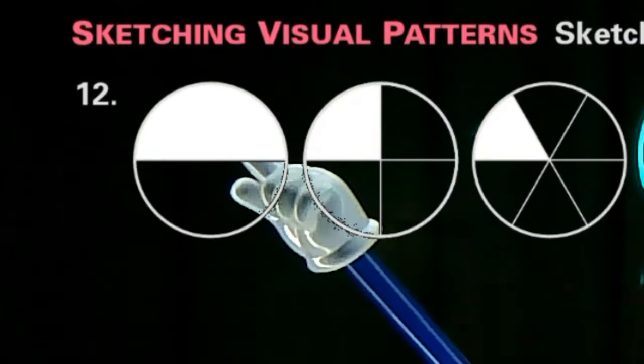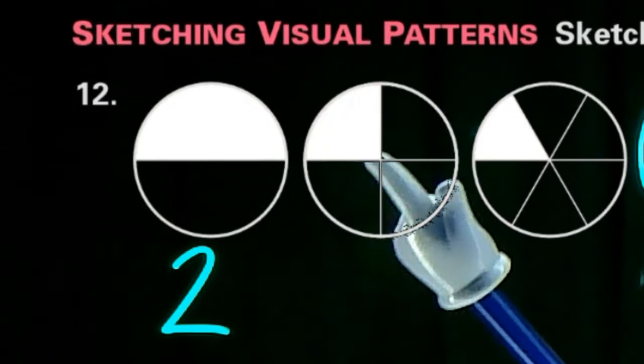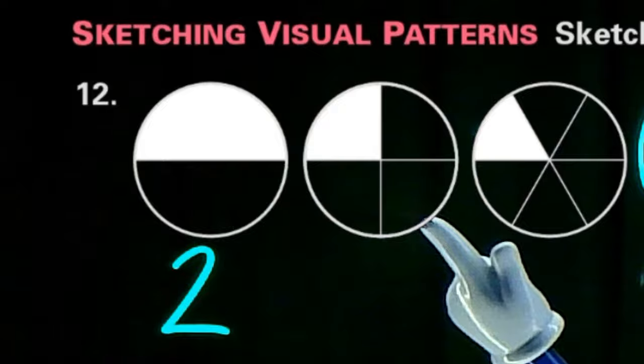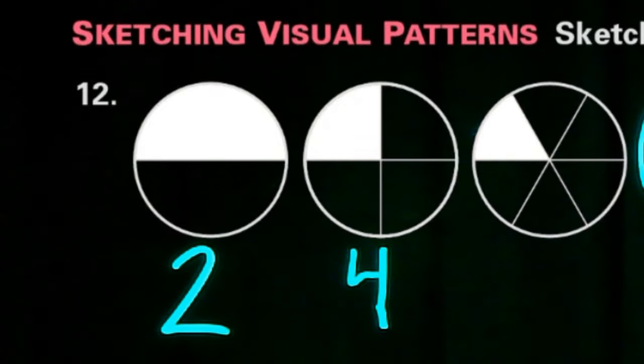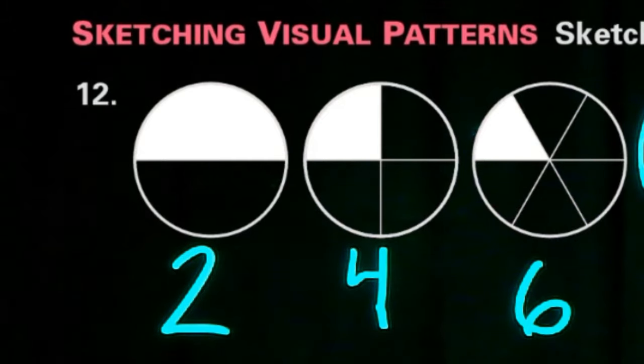This first circle is one, two pieces. And we can see that the second circle is one, two, three, four pieces. And this third circle is one, two, three, four, five, six pieces.